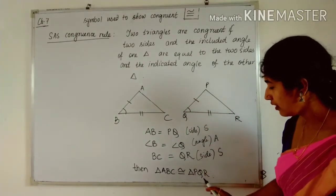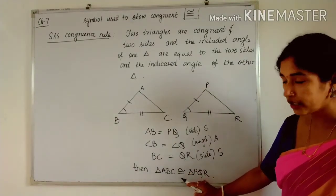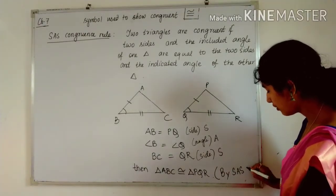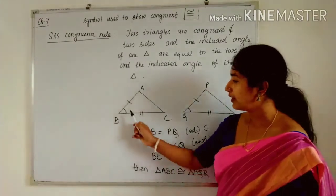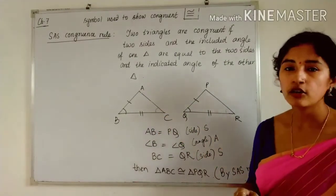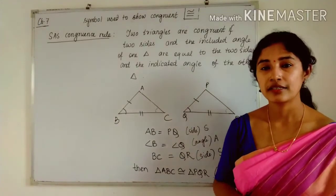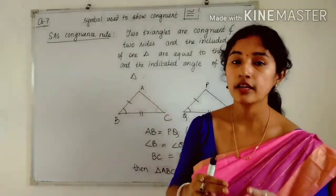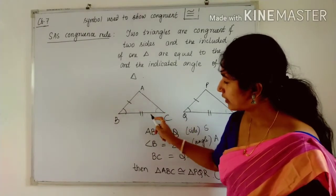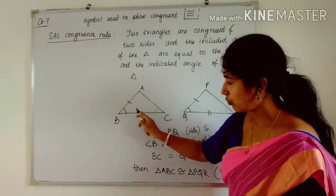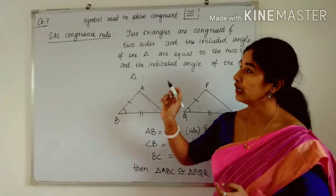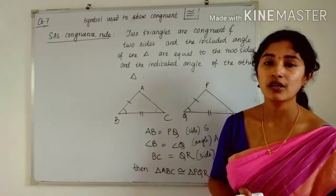We write: triangle ABC is congruent to triangle PQR by SAS congruence rule. One important thing: if the angle is not included between the equal sides — for example, if angle C equals angle R instead of angle B — then we cannot apply the SAS rule. The angle must be included between the two equal sides, like angle B is included between AB and BC.